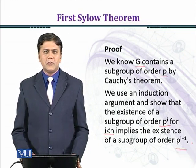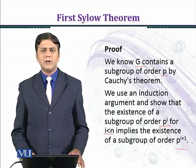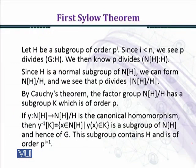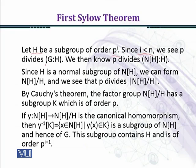We need to prove the existence of a subgroup of order P raised to power I plus one. Let H be a subgroup of order P raised to power I. Since I is less than n, we see that P divides the index of H in G, as the order of G is P^n times M.